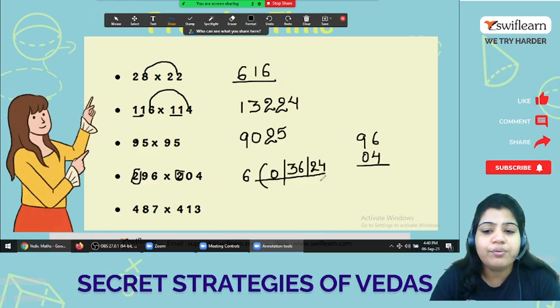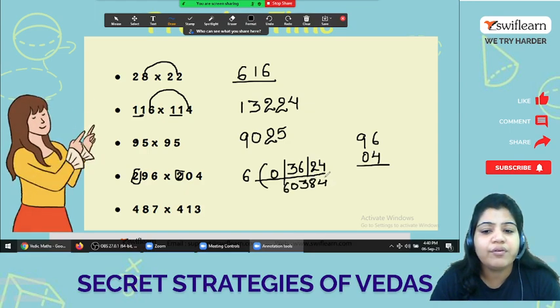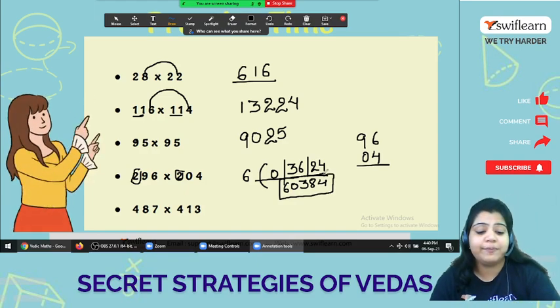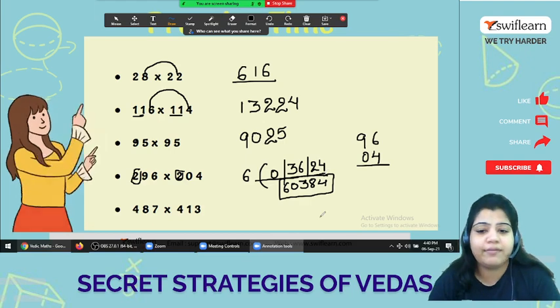What do you have to do? 4, 8, 3, 0. And this is your final answer, 60384. I hope this part is clear.